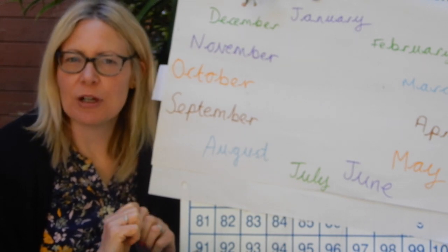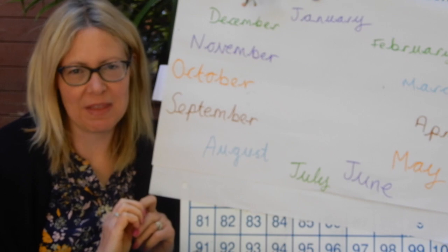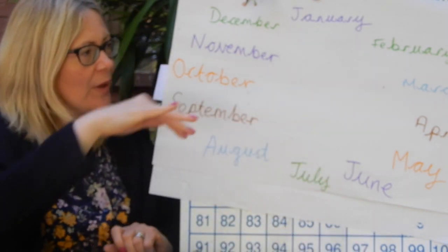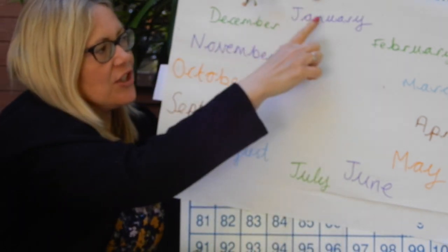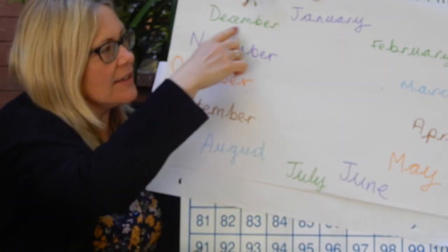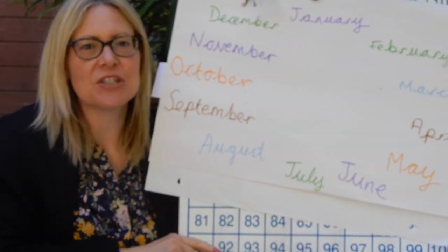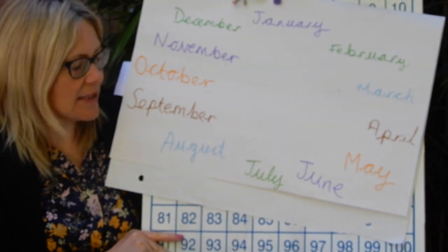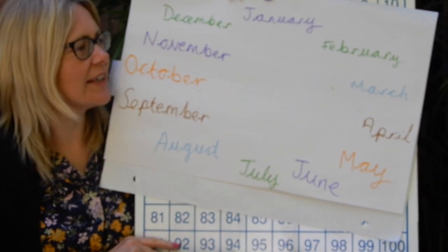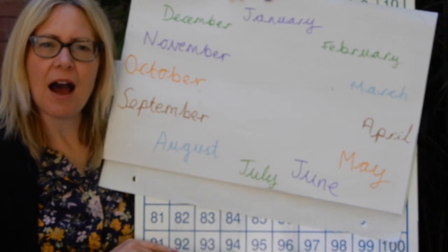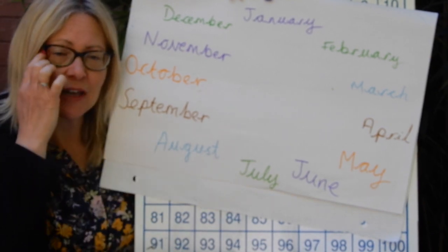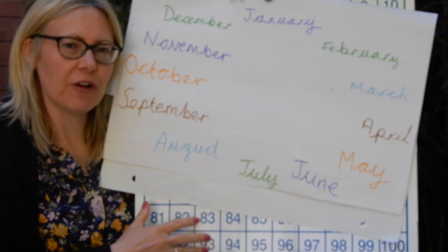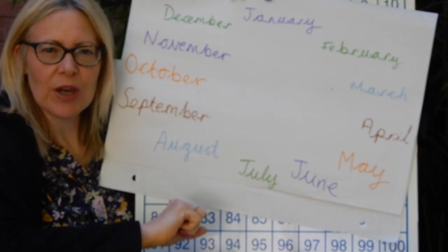Before we go on to talk about o'clock, I want to sing our months of the year song so we don't forget those 12 months in the year. We are going to start at the top with January and go round the circle until we finish with December. Remember there are 12 months in the year and they repeat themselves as you go into the new year. Okay, so after three - one, two, three.